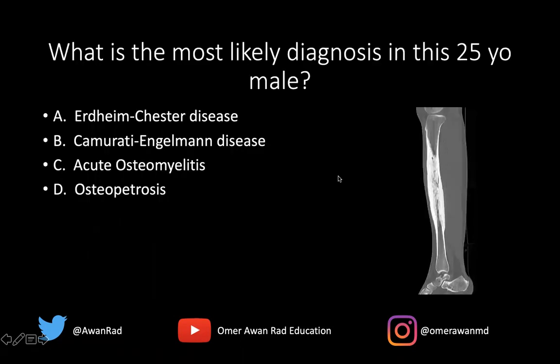The question I have for you is: what's the most likely diagnosis in this 25-year-old male? Is it Erdheim-Chester disease, Camurati-Engelmann disease, acute osteomyelitis, or osteopetrosis? Remember, this is a pretty young 25-year-old male.